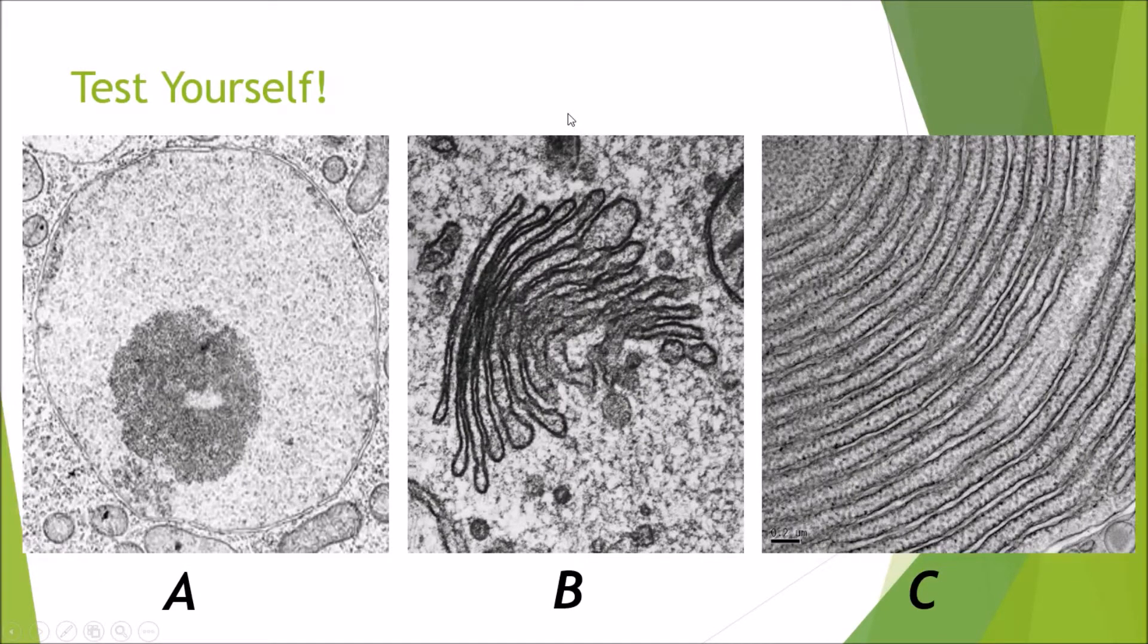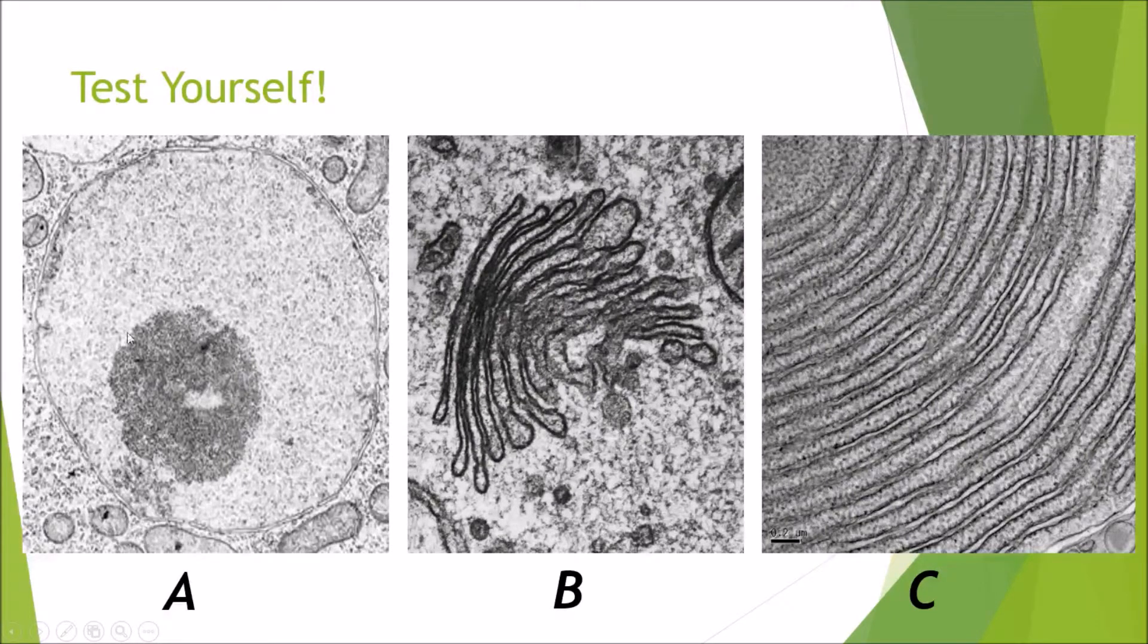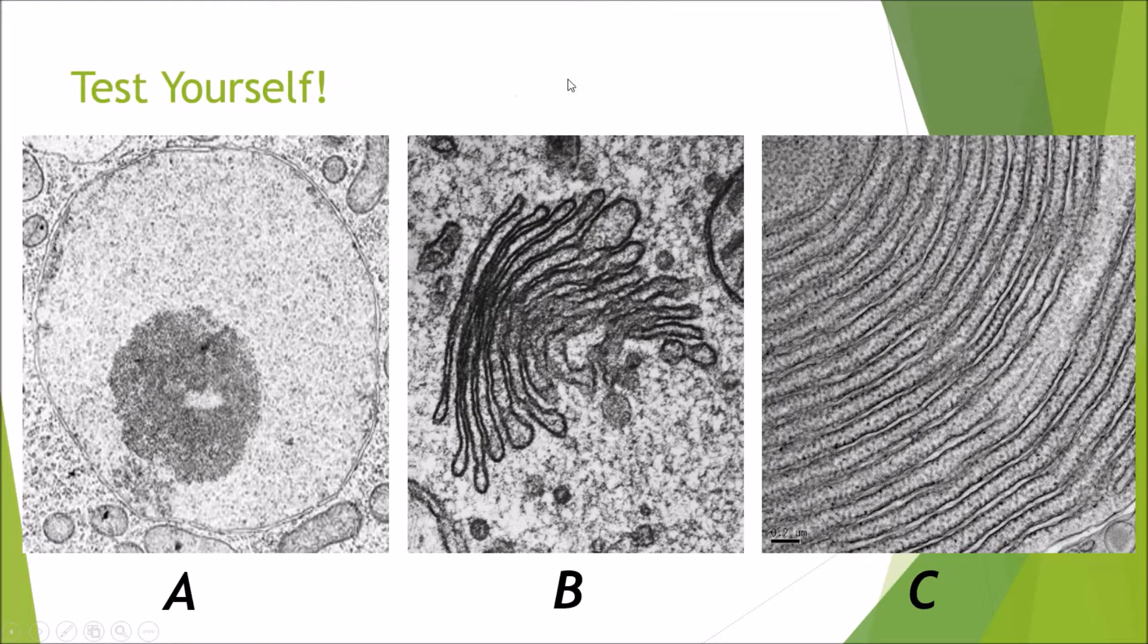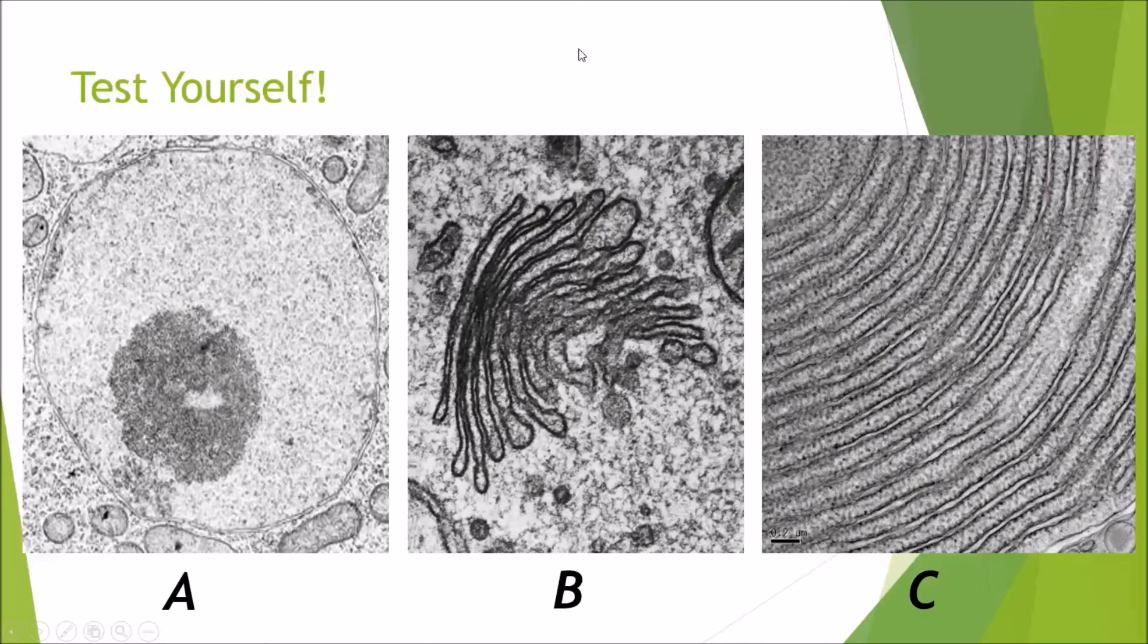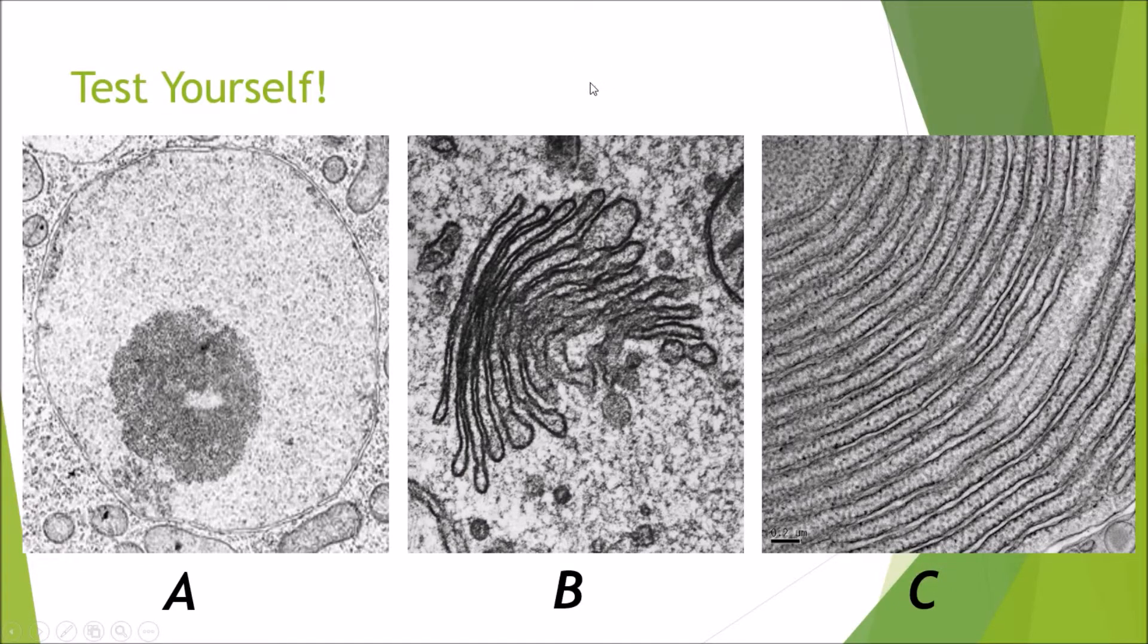Which of these three organelles is the nucleus? The answer is A. We have this massive spherical organelle with this darker area inside which is the nucleolus. And which of these organelles is the site of protein synthesis? And the answer? C. For it is the rough endoplasmic reticulum, as we can see these rough zones on it which are the ribosomes.